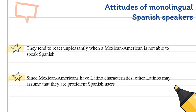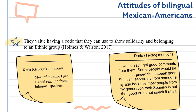Monolingual Spanish speakers tend to react unpleasantly when a Mexican-American is not able to speak Spanish. Since Mexican-Americans have Latino characteristics, other Latinos may assume that they are proficient Spanish users. The attitudes of bilingual Mexican-Americans toward Spanish were positive. Bilingual speakers may be encouraged to use more Spanish when they interact with other bilinguals, since they observe that it is accepted. Members of a community using their heritage language among themselves is an optimistic sign that the language will prevail in future generations.